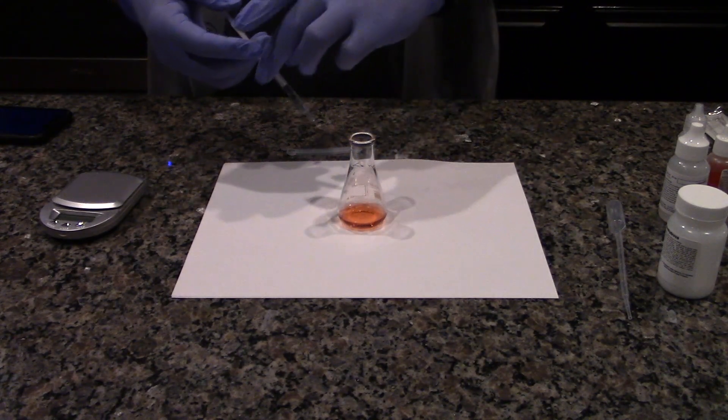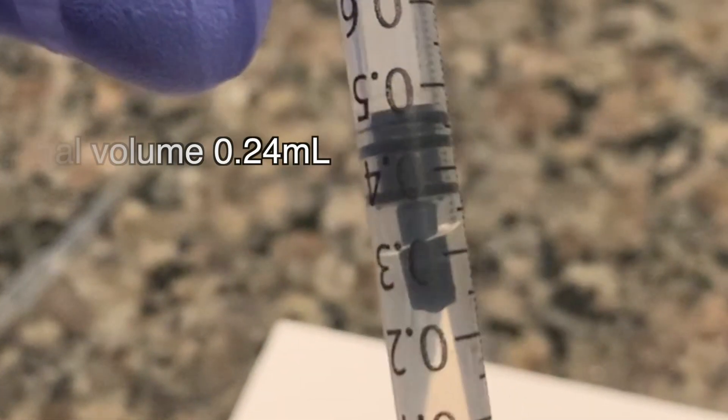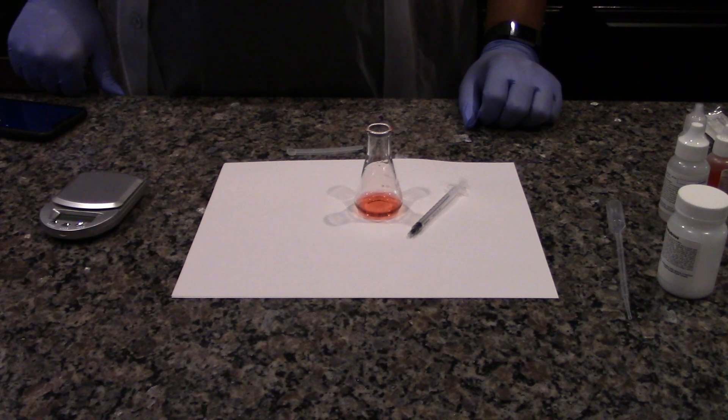Once the endpoint has been reached, record the final volume of hydrochloric acid in the syringe in the data table. Dispose of the titrated solution sample in the sink, rinse the 25ml flask, and repeat the steps for trials 2 and 3.